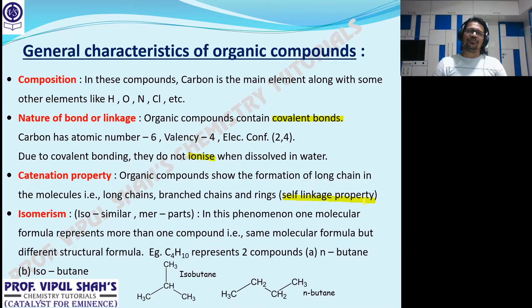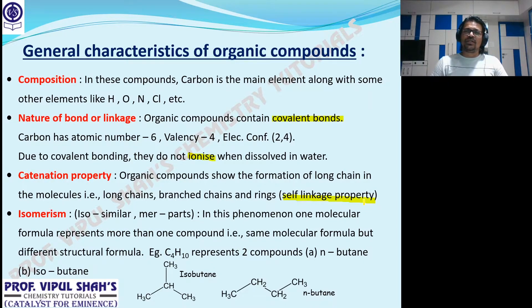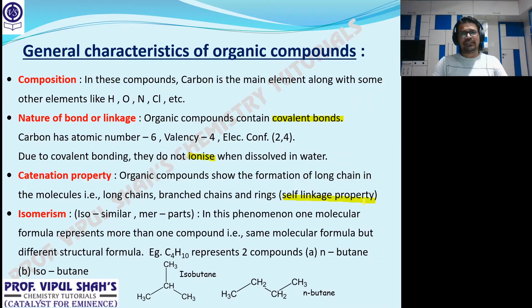Next, an important phenomenon: isomerism. 'Iso' means similar, 'mer' means parts — compounds made up of similar parts. What are isomers? Two or more compounds that have the same molecular formula but different structural formulas are said to be isomers of each other. That phenomenon is called isomerism.